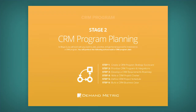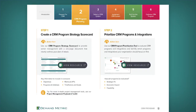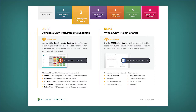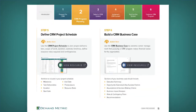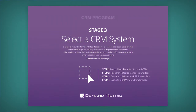In stage number two, we're going to focus on CRM program planning. Here, we're going to start by creating a CRM program strategy scorecard, prioritizing CRM programs and initiatives, developing a CRM requirements roadmap, writing a CRM project charter, project schedule, and ultimately building the business case.